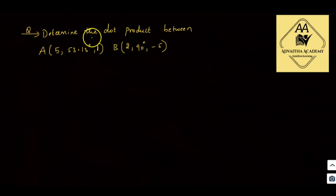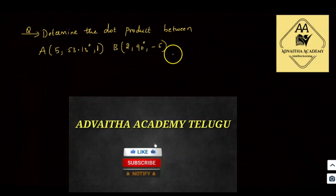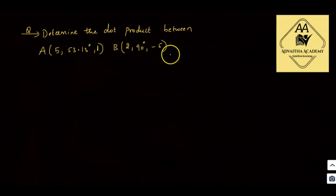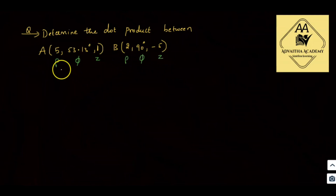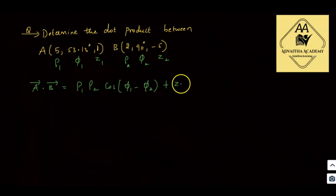Cartesian is easy, but cylindrical and spherical problems are solved using their formulas. First question: determine the dot product between A(5, 53.13°, 1) and B(2, 90°, -5). This is a cylindrical coordinate system with points (rho, phi, z). So rho1=5, phi1=53.13°, z1=1 and rho2=2, phi2=90°, z2=-5. The formula: A bar dot B bar = rho1·rho2·cos(phi1 minus phi2) plus z1·z2.